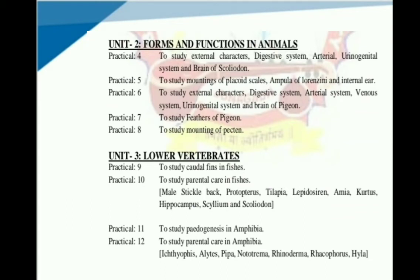Unit number 2 practicals — this unit has a total of 5 practicals. Practical No. 4: study external characters, digestive system, arterial, urinogenital system and brain of Scoliodon. Practical No. 5: study mounting of placoid scale, ampullae of Lorenzini, and internal ear. Practical No. 6: study external characters, digestive system, arterial system, venous system, urinogenital system, and brain of Pigeon. Practical No. 7: study feathers of Pigeon. Practical No. 8: study mounting of pecten.